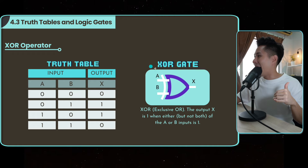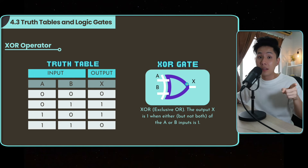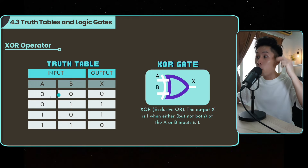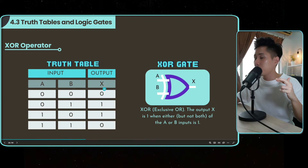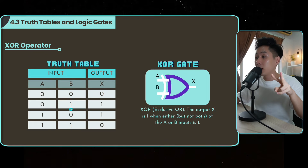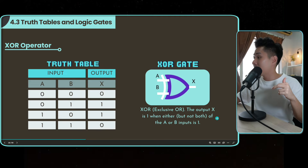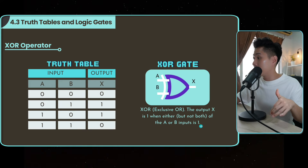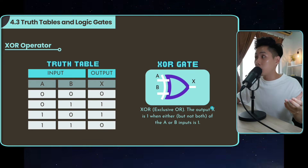XOR is a special gate because it will only produce an output of 1 when exactly one of the inputs is 1. When both inputs are 0 or both are 1, the result is 0. Only when one input is true and the other is not will you produce an output of 1. So the output X is 1 when either A or B is 1, but not both. That's the XOR operator — exclusive OR.